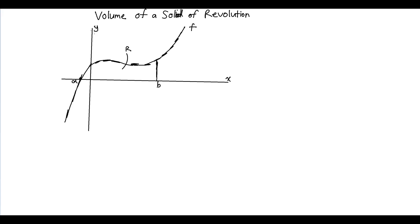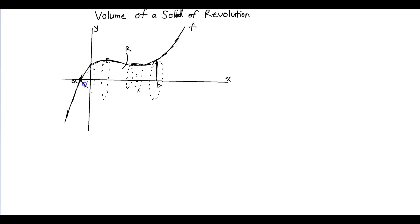The very first thing you need to do is visualize how it would look like. If the shape was revolved, each point on this line would trace out a circle. This point traces a circle, this point traces a smaller circle, and this point would be fixed since it's on the x-axis. And what you start to see is this solid starting to form.